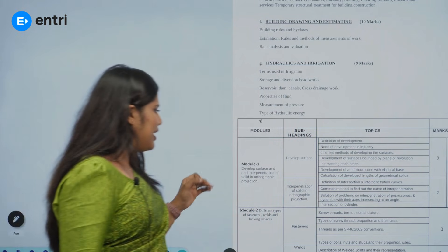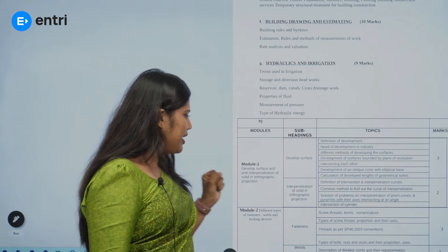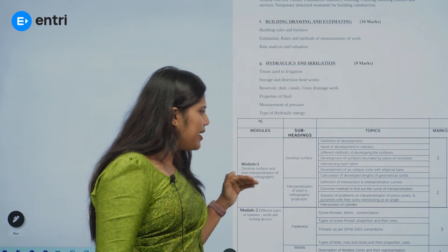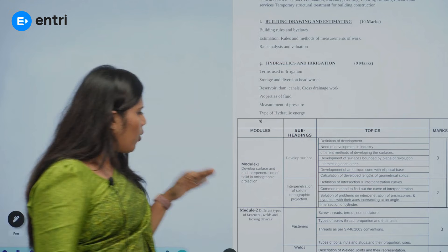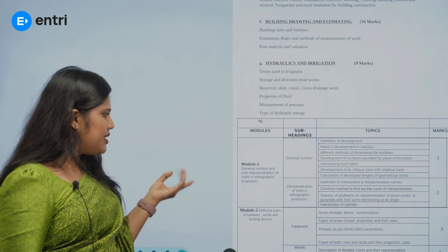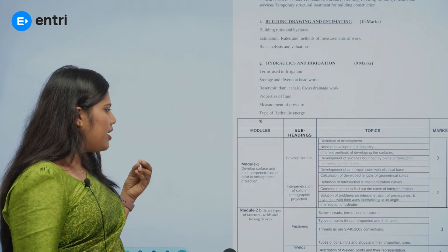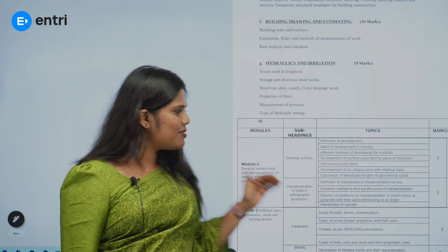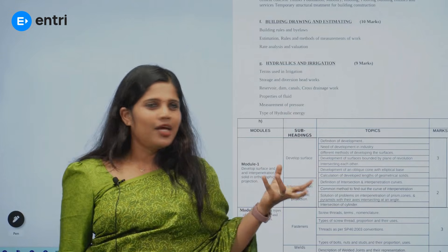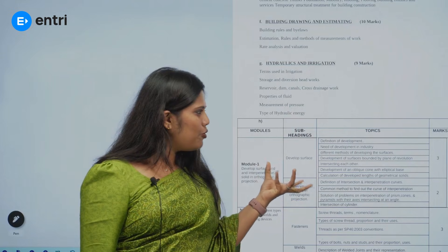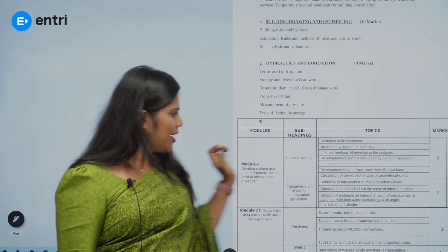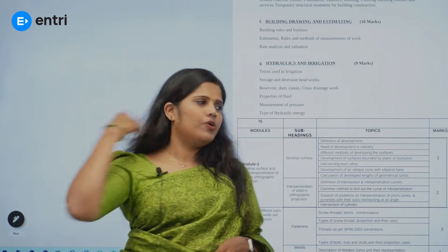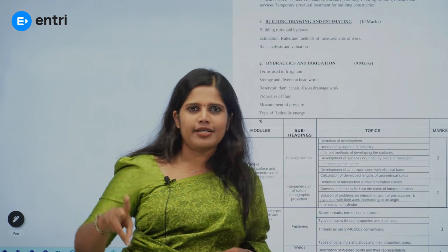Module 1 is Engineering Graphics — drawing, development of surface, solids, and orthographic projection detail. We need to learn engineering graphics for 3 to 5 marks. Surface development is 3 marks and solids is 3 marks.